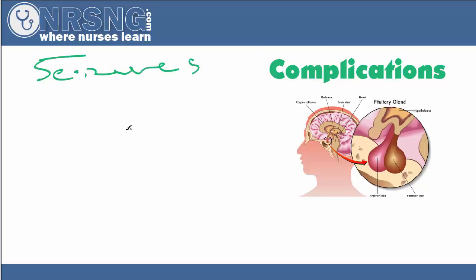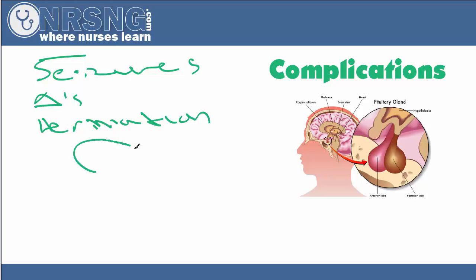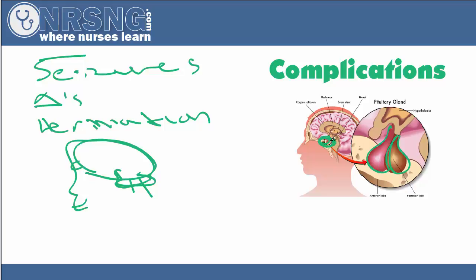Let's talk about some of the complications of these tumors. We've talked about seizures as one of the big complications, along with all the neuro changes, which are hard for the family. Herniation is another complication — as the tissue swells, the brain can push through openings like the foramen magnum, causing serious issues.